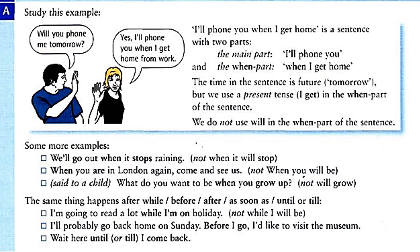For example: 'When you phone me tomorrow' — 'Yes, I'll phone you when I get home from work.' Here, 'when I get home' refers to the future, but we use the present tense. The 'when' clause is a time clause with two parts: the main clause 'I'll phone you' and the time clause 'when I get home.'